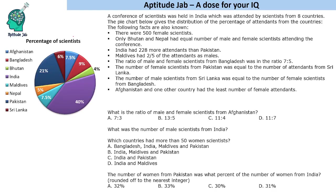We are not given the total number of scientists, so we need to figure it out from the given statements. India had 228 more attendants than Pakistan. India is 40% and Pakistan is 21%, so the difference is 19%. Since 19% equals 228, the total number of scientists is 1200.